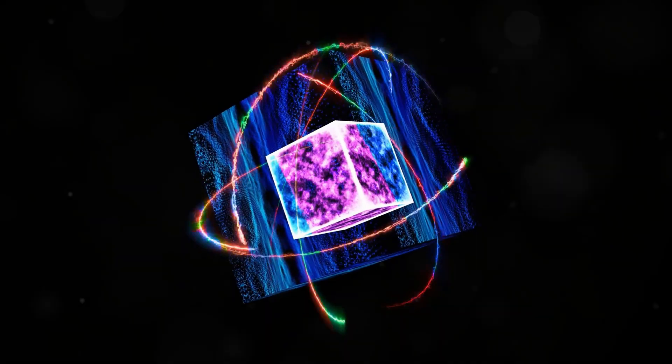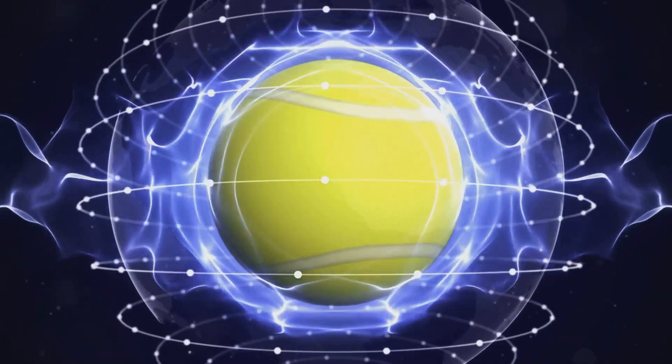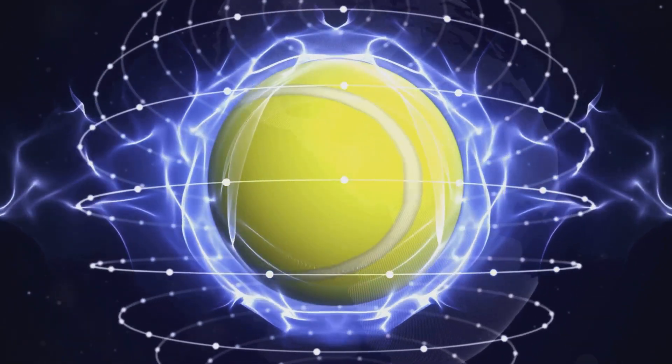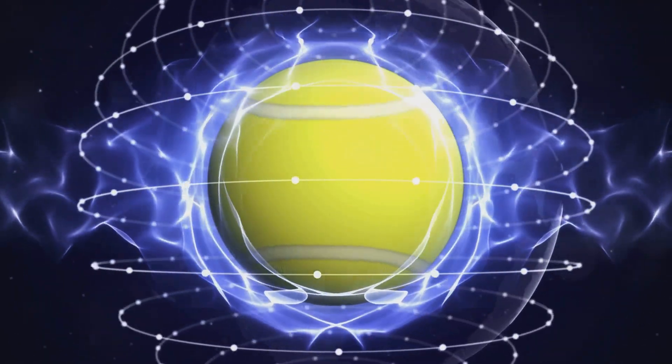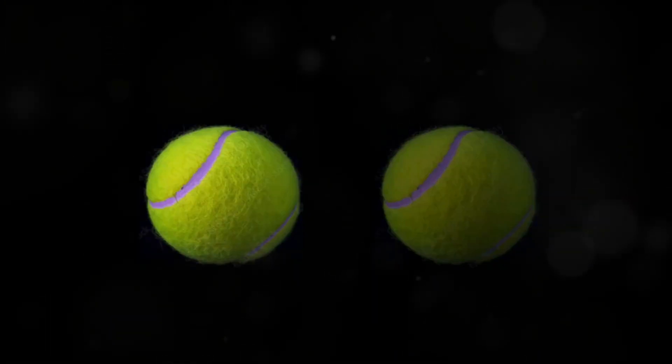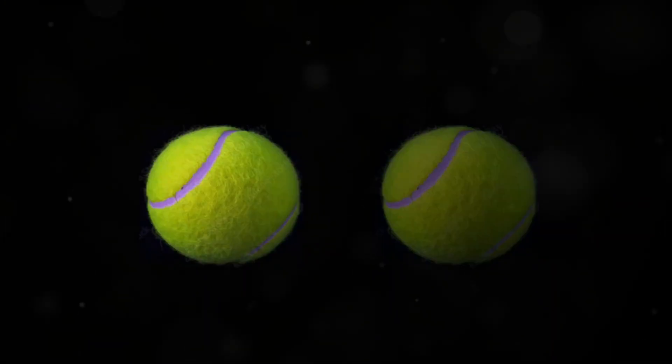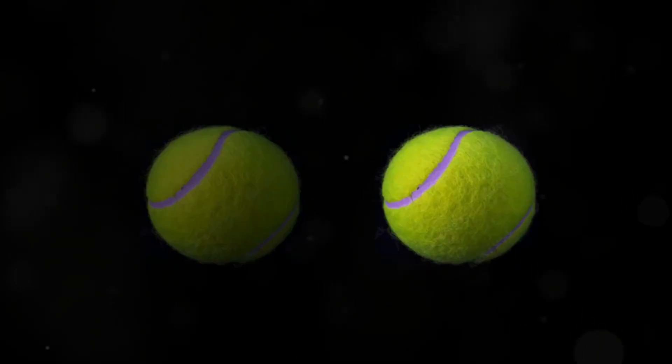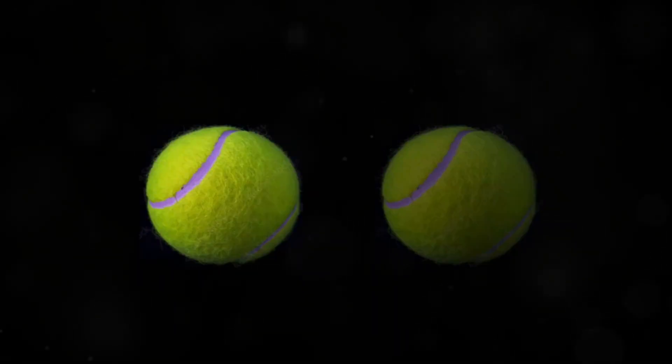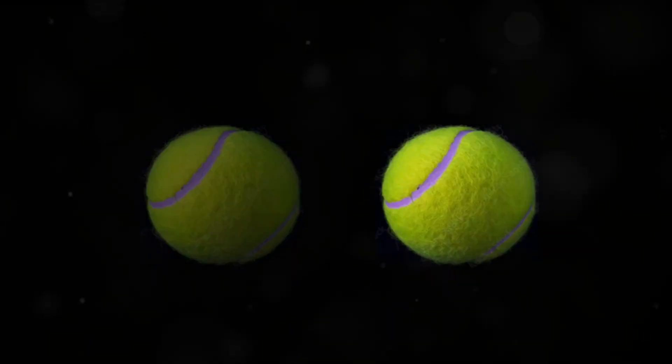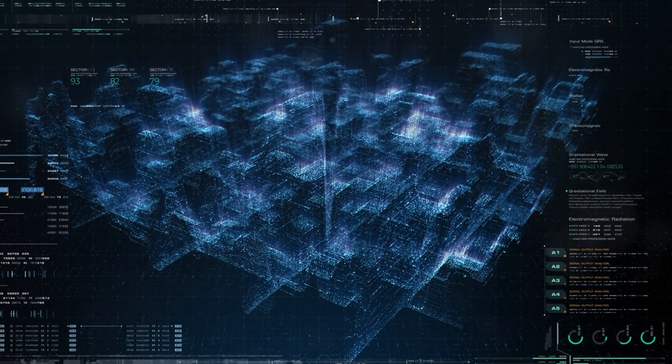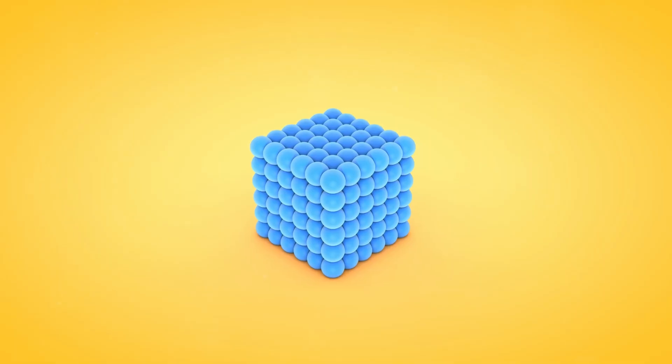Now what if scientists were able to re-cohere even larger structures like a tennis ball, which consists of millions of atoms? If they could somehow prevent all the interactions between these atoms and their environment, the tennis ball could in theory exhibit quantum phenomena such as wave-like behavior and interference, existing in multiple places at once.